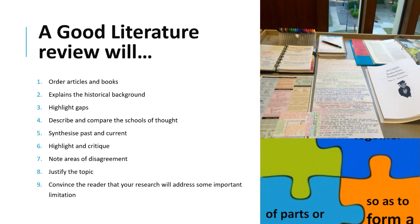How do you separate a good literature review from a poor one? A good literature review orders articles and books to focus on unresolved debates, inconsistencies, tensions, and questions in the research field. It explains the historical background of a topic by looking at seminal work — who first wrote about it, who came up with a concept or theory. It highlights gaps, describes and compares schools of thought, such as behaviourists, social constructivists, and critical theorists, and highlights and critiques research methods.